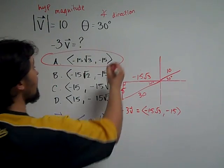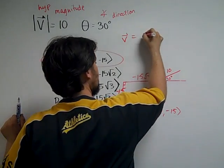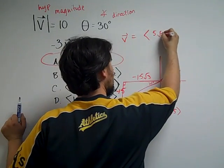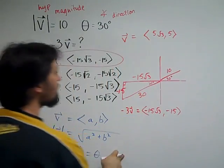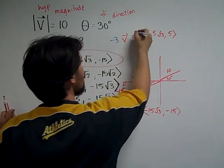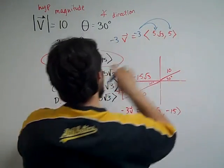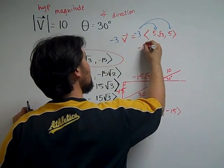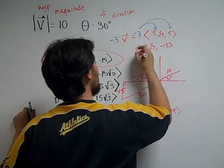The alternate way to have done this would have been to write the vector V to begin with. And vector V is just 5 root 3, comma, 5. And we could have multiplied it by negative 3. Multiplying this by negative 3 and distributing this out, we get the same value of negative 15 root 3, comma, negative 15 for your final answer.